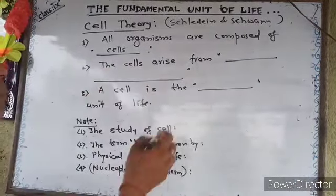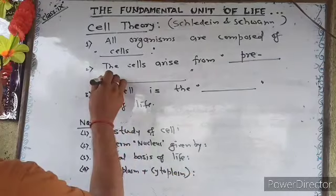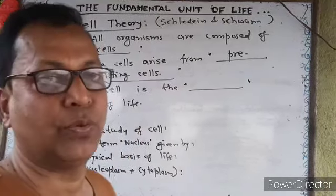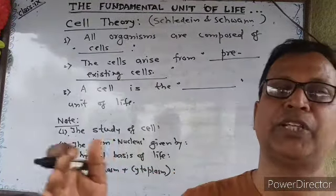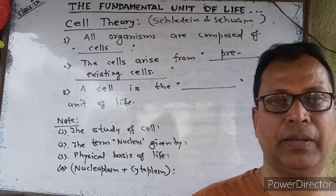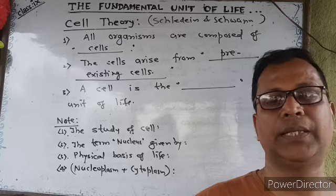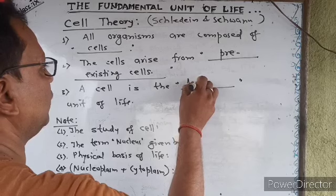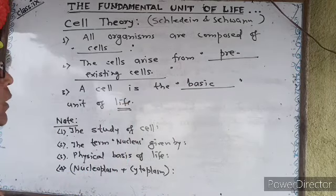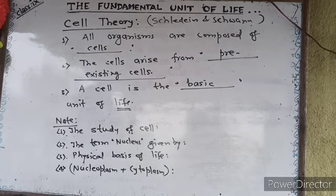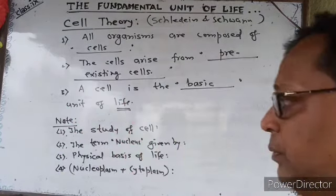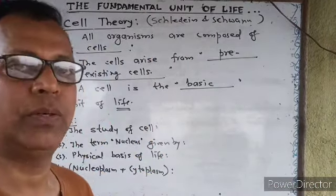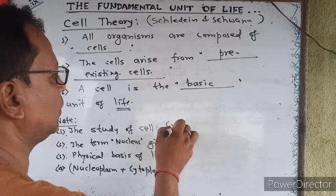Second point of cell theory: cells arise from pre-existing cells. Third point: a cell is the basic unit of life. The branch of science which deals with the study of cells is known as cytology.